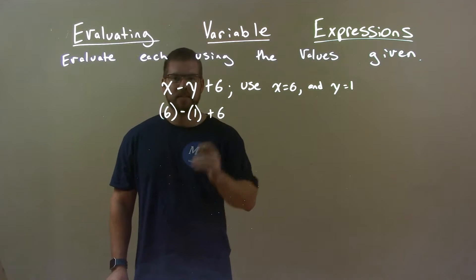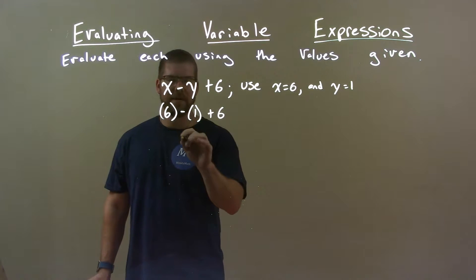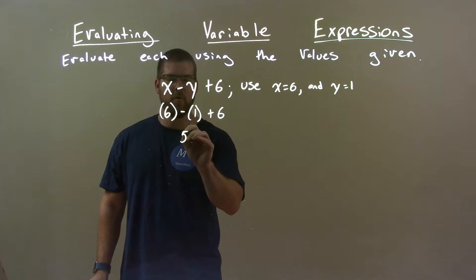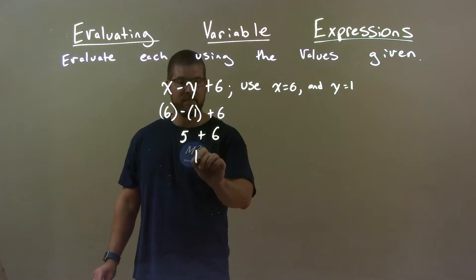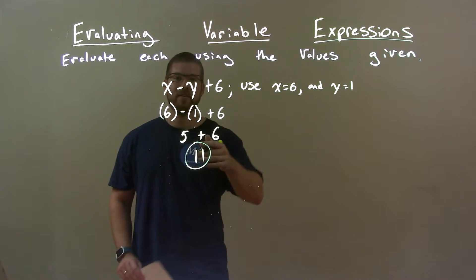Now we just simplify. 6 minus 1 is 5. That's a weird looking 5 but it's there. And then bring down the 6. 5 plus 6 is 11. So our final answer here is just 11.